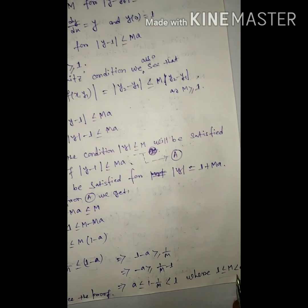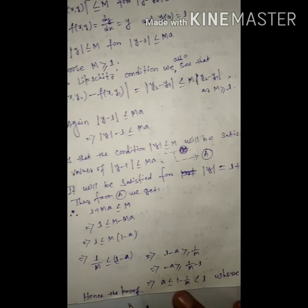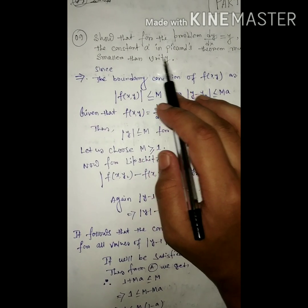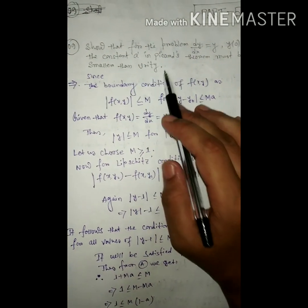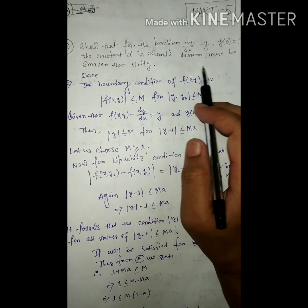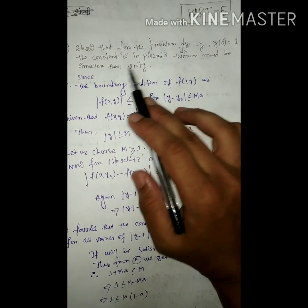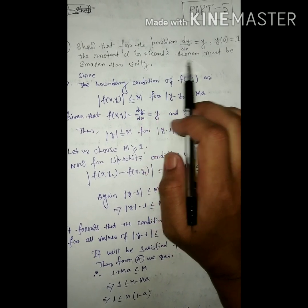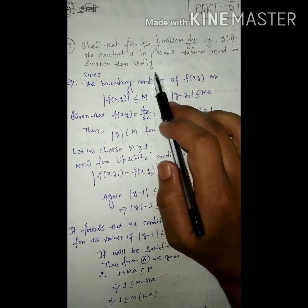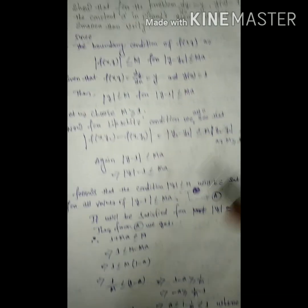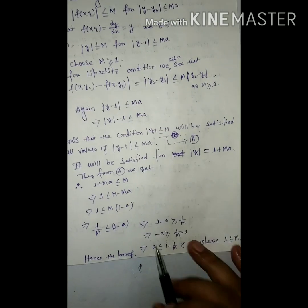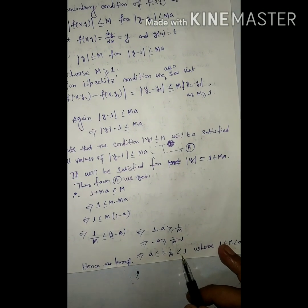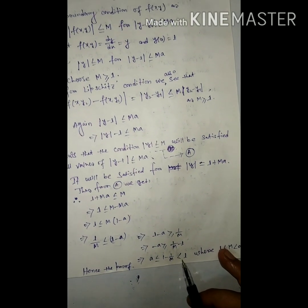Hence the proof is complete. The constant a in Picard's theorem must be smaller than unity, and here a < 1, which is smaller than unity.